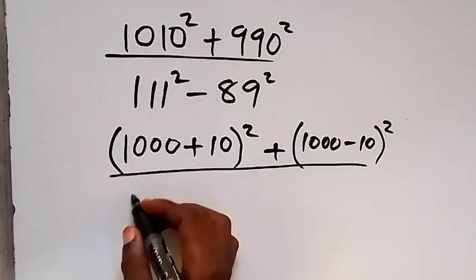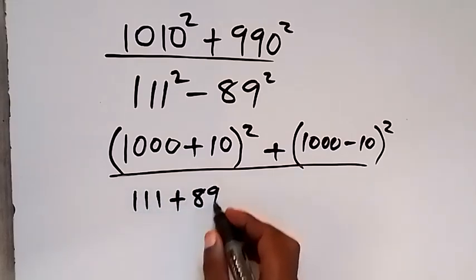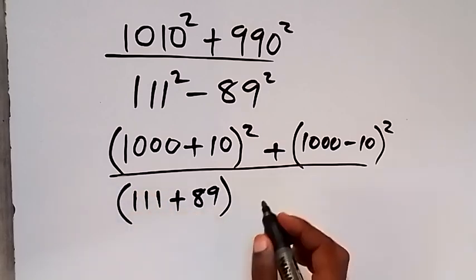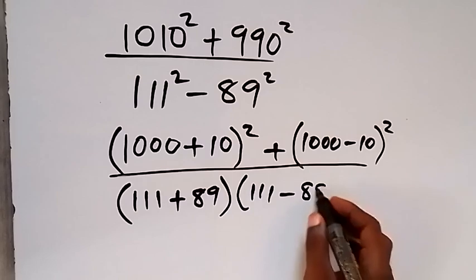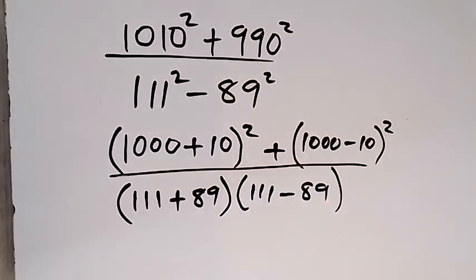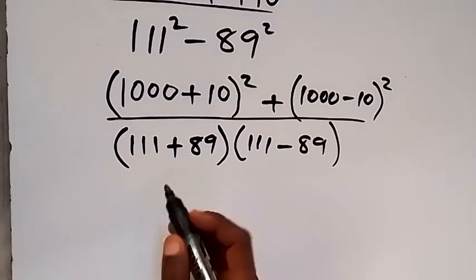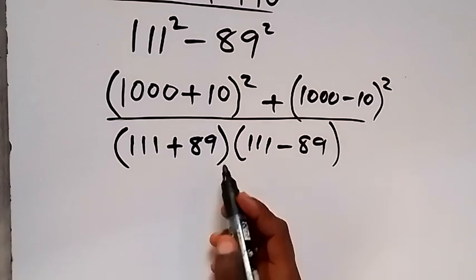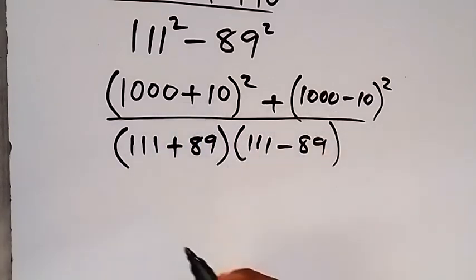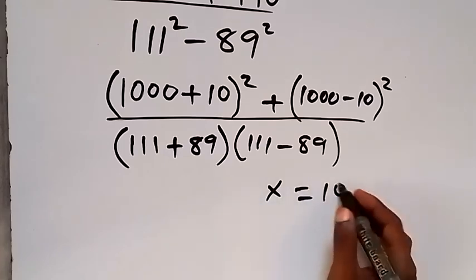All over this denominator we can express it in the form of difference of two squares, that is we have 111 plus 89 then multiply by 111 minus 89. So we apply the difference of two squares. And from here we can see 1000 is common here, so let x be equal to 1000.